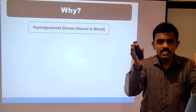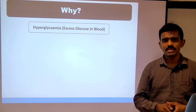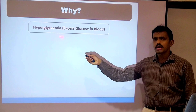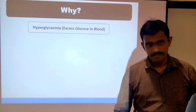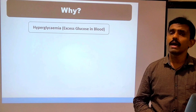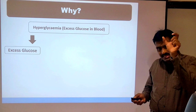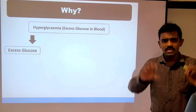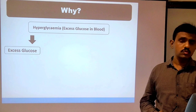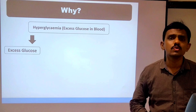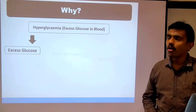The question is: why does this happen? Why does hyperglycemia lead to these various complications — both micro and macrovascular? When we talk about diabetes, we are talking about hyperglycemia — increased blood glucose levels. When your blood glucose remains elevated for a long time, what happens to that excess glucose?